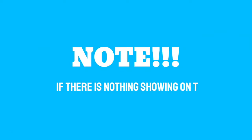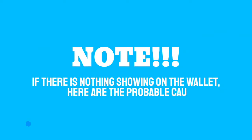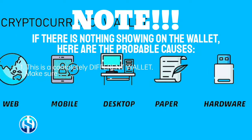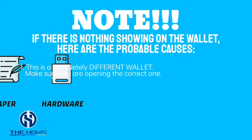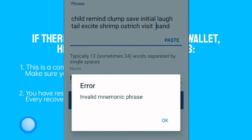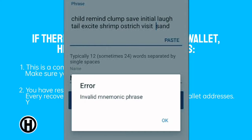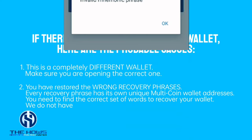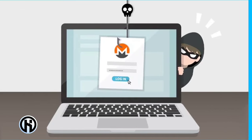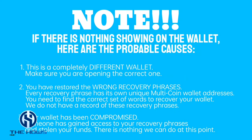Important to note: if there is nothing showing on the wallet, here are the probable causes. Number one: this is a completely different wallet — make sure you are opening the correct one. Number two: you have restored the wrong recovery phrases. Every recovery phrase has its own unique multi-coin wallet addresses; you need to find the correct set of words to recover your wallet — we do not have a record of these recovery phrases. Number three: your wallet has been compromised. Someone has gained access to your recovery phrases and stolen your funds; there is nothing we can do at this point.